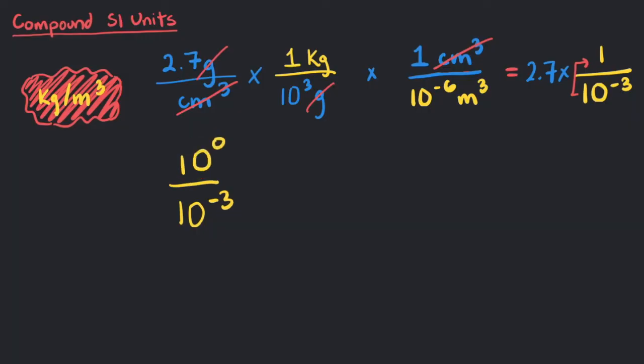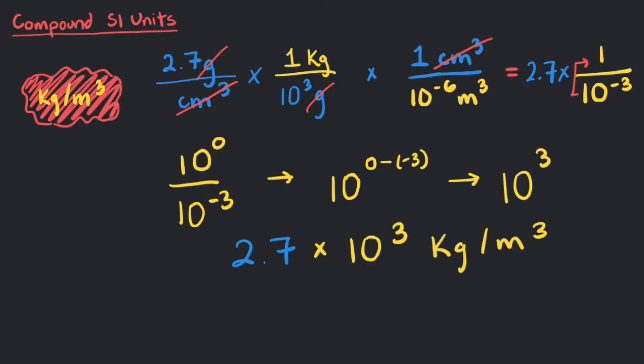Another way to put this is to think of the 1 in the numerator as 10 to the 0th power. When dividing exponents of the same base, we subtract the top exponent by the bottom one. 0 minus negative 3 is 3, giving us the same 10 to the 3 as before. With this, our final answer is 2.7 times 10 to the 3 kilograms per cubic meter, which can also be written as 2,700 kilograms per cubic meter.